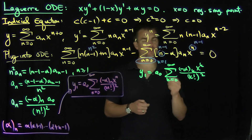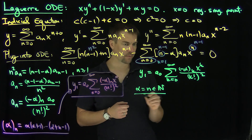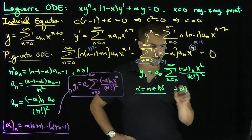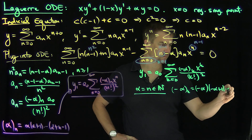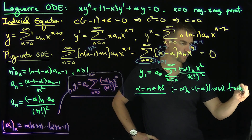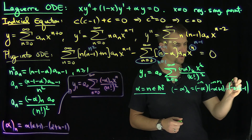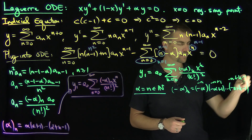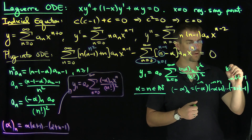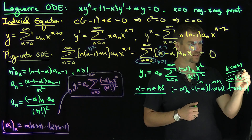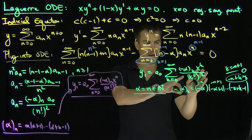If alpha equals n, the ascending factorial negative alpha_k equals negative n times negative n plus 1 times ... times negative n plus k minus 1. We can see that when k equals n plus 1, one of these factors becomes zero, so terms in the series past k equals n plus 1 are zero. Therefore the series terminates.